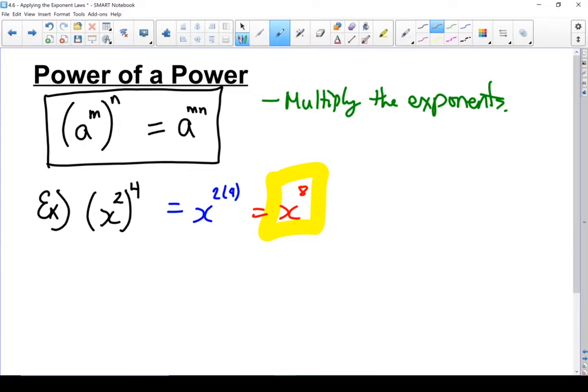Let's go through why that works. Working from the outside in, it's like I'm taking 4 x squareds and multiplying those all together. So it's like I've got x squared times x squared times x squared times another x squared. 4 x squareds all together.